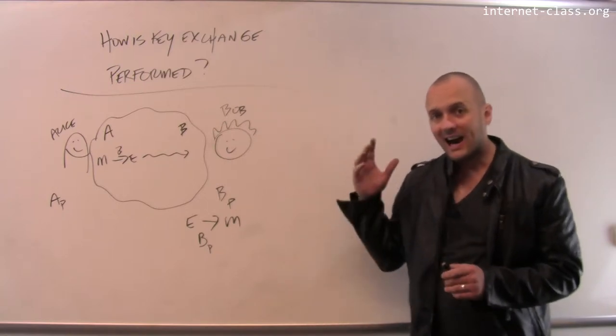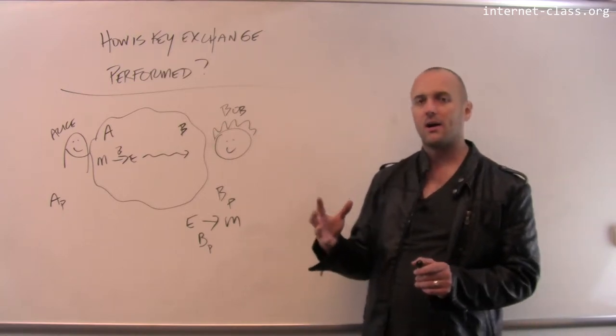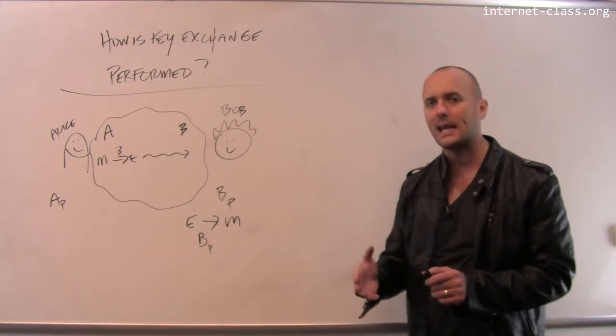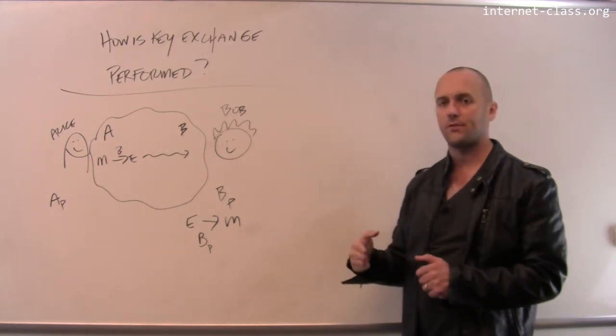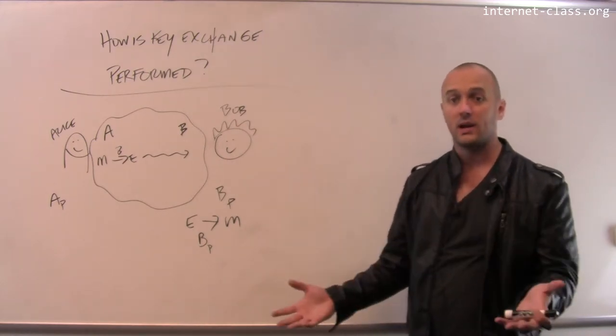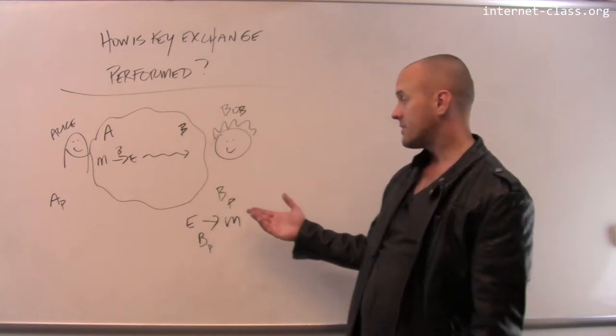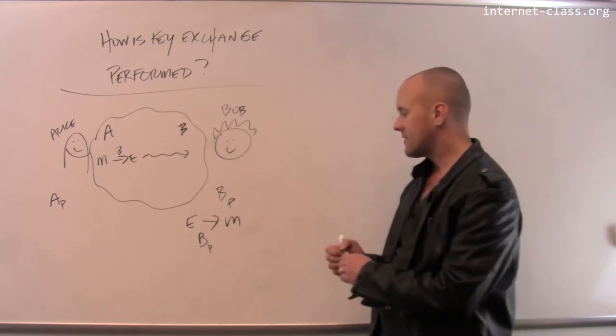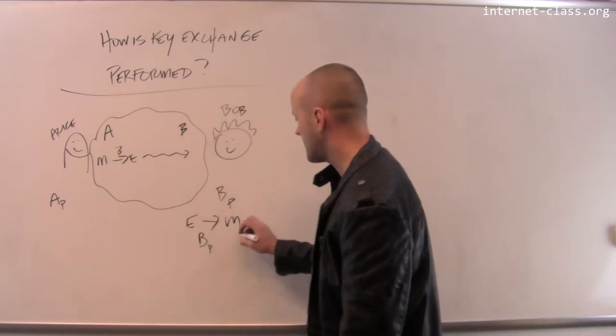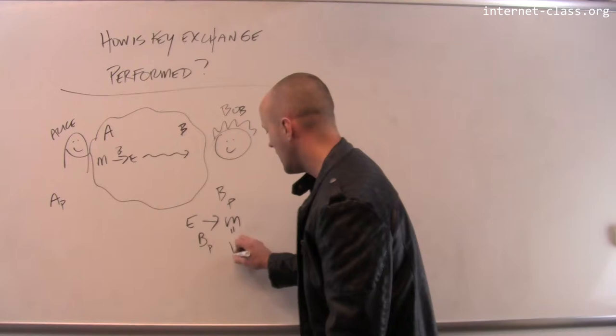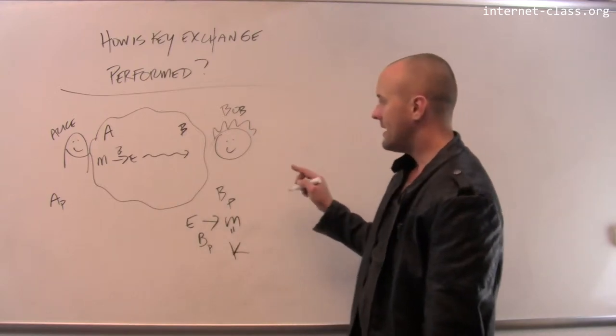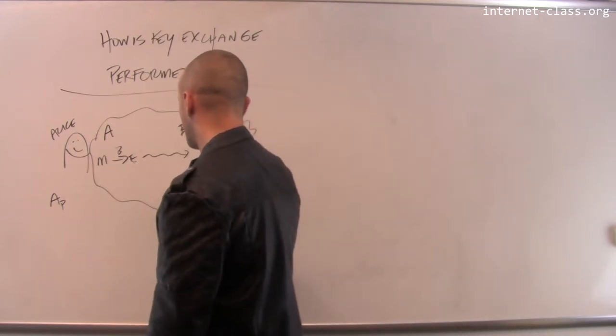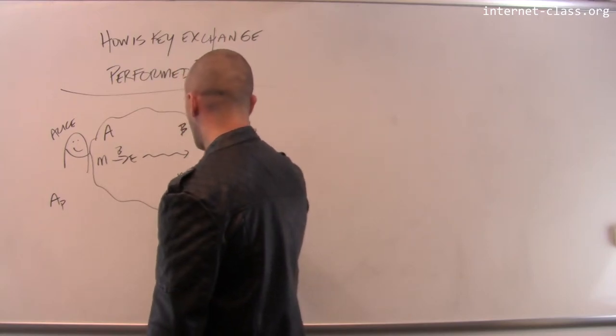However, the contents of this message are a symmetric key that Alice wants to use for the rest of their communication. So Bob would say okay, and then Bob would write back using that symmetric key. So the idea here is that the contents of this message are actually a key, and now the next message that Bob sends over, he's going to encrypt using this key that Alice just proposed.